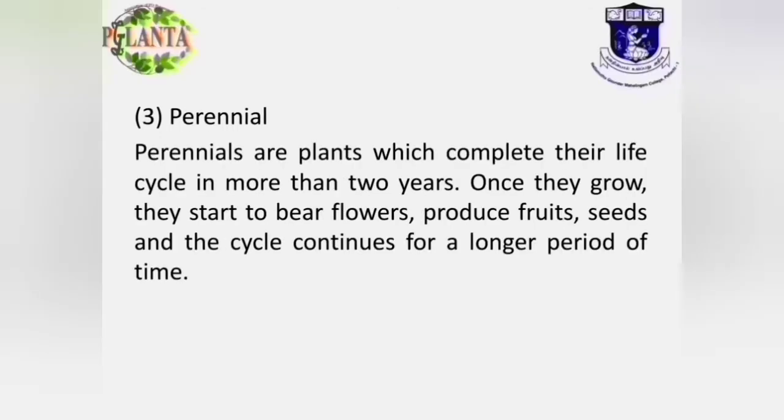Perennials are plants which complete their life cycle in more than two years. Once they grow, they start to bear flowers, produce fruits and seeds, and the cycle continues for a longer period of time. For example, mango, coconut, palm and banyan, etc.